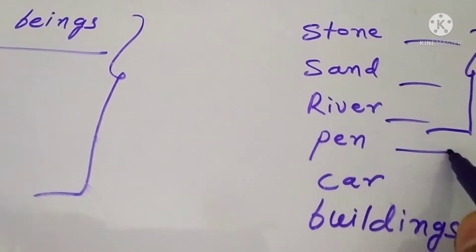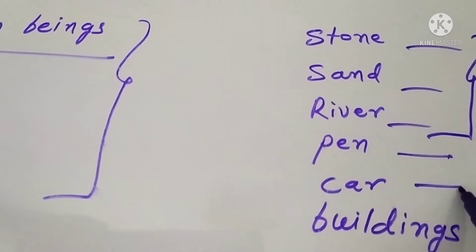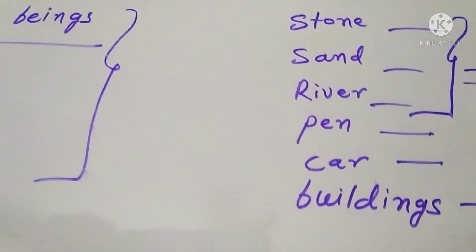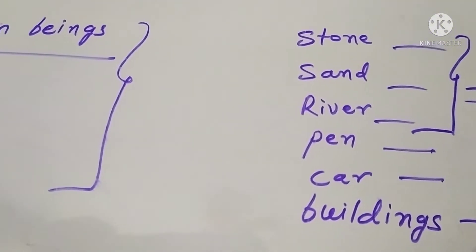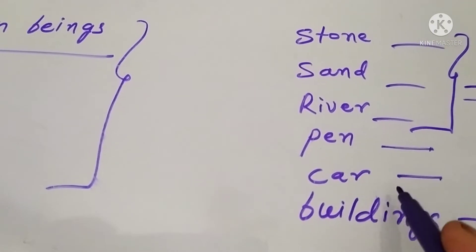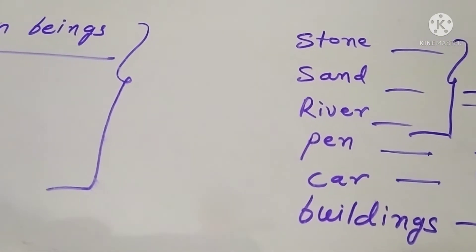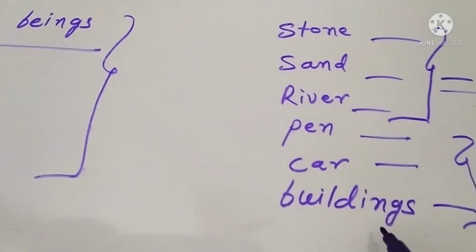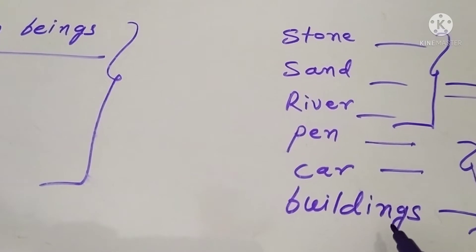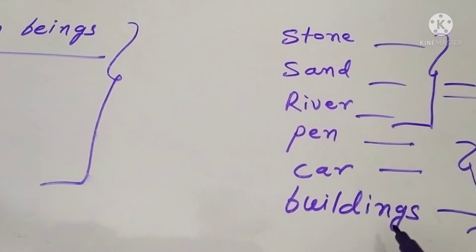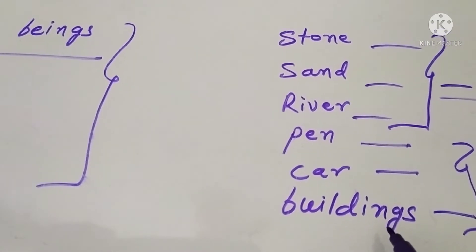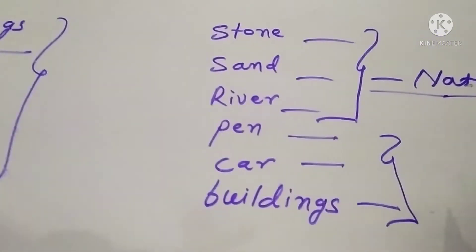As like here — pen, car, buildings. Are these natural things? No. These are not natural things. These are man-made things.